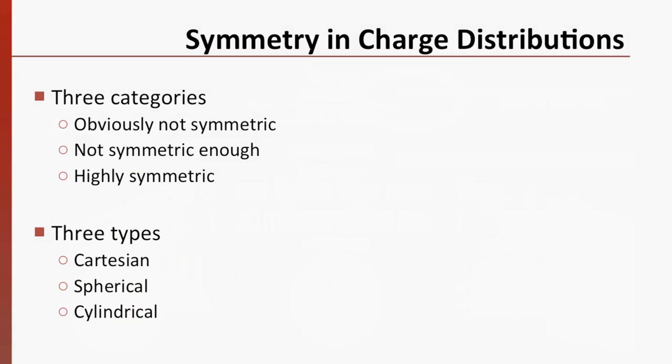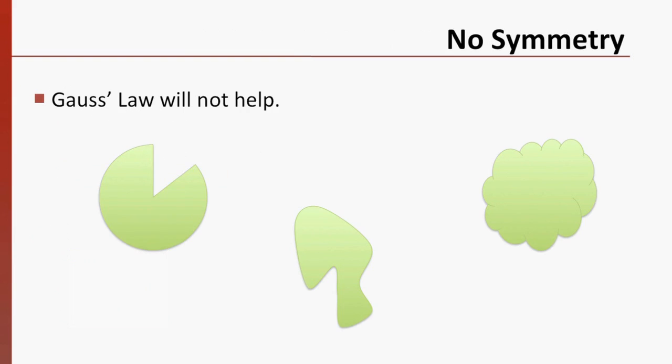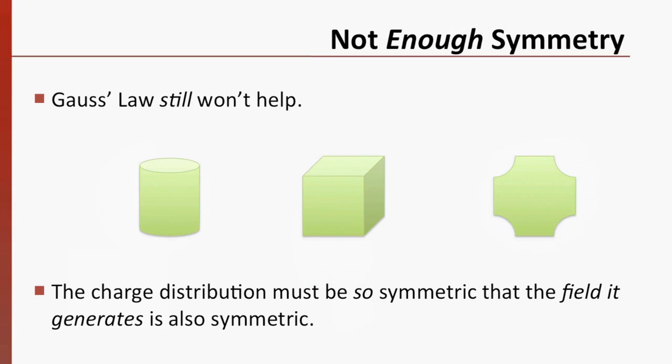There are three categories that we'll investigate, and three types of symmetry to consider. Our hope is to have a highly symmetric charge distribution with any of the three types of symmetry. That's when Gauss's law is easiest to apply. These examples have little or no symmetry to them, and are not the sort of thing for which we can use Gauss's law. These three charge distributions have visible symmetry, but that's not enough. We need a charge distribution so symmetric that the field it generates is also symmetric. Let us show why.